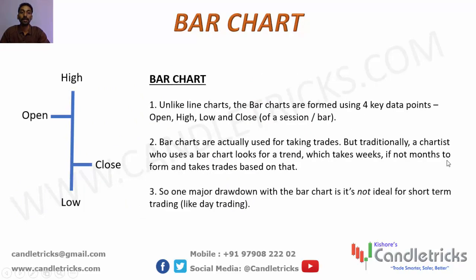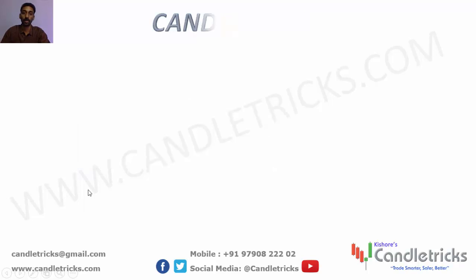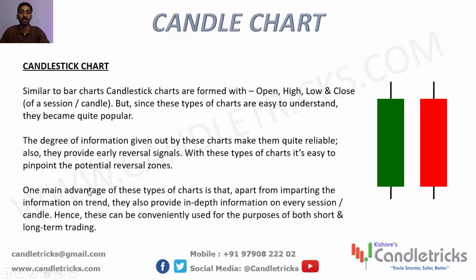This is bar chart, the next better version of line chart. This bar chart has additional information because of four data points called OHLC, which means Open, High, Low, and Close. Open is the opening price of the day or candle, Close is the closing price, High is the maximum price, and Low is the lowest price of the day or candle. The advantages of OHLC are easy identification of trend, support and resistance, and breakout levels.